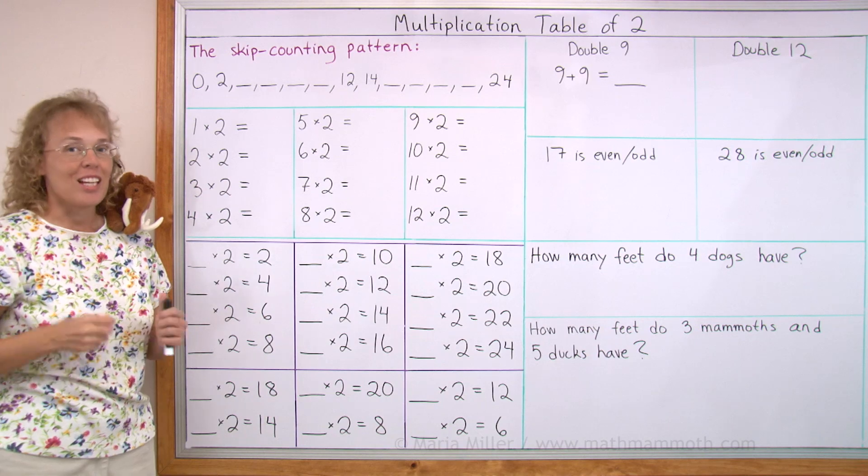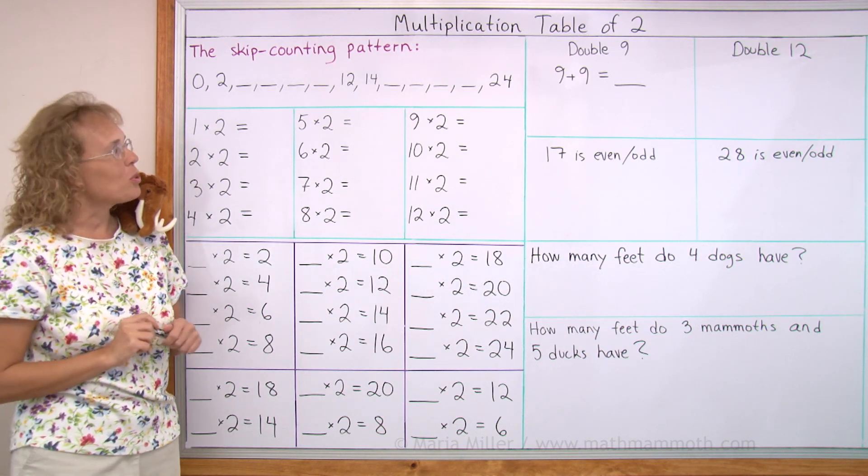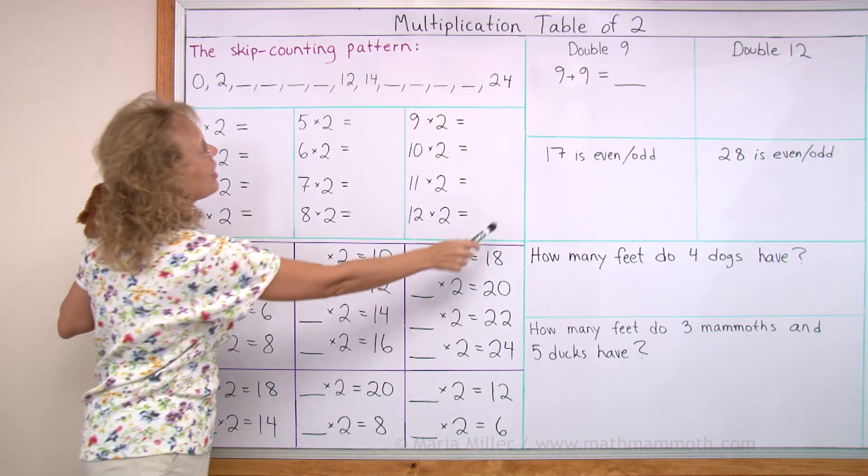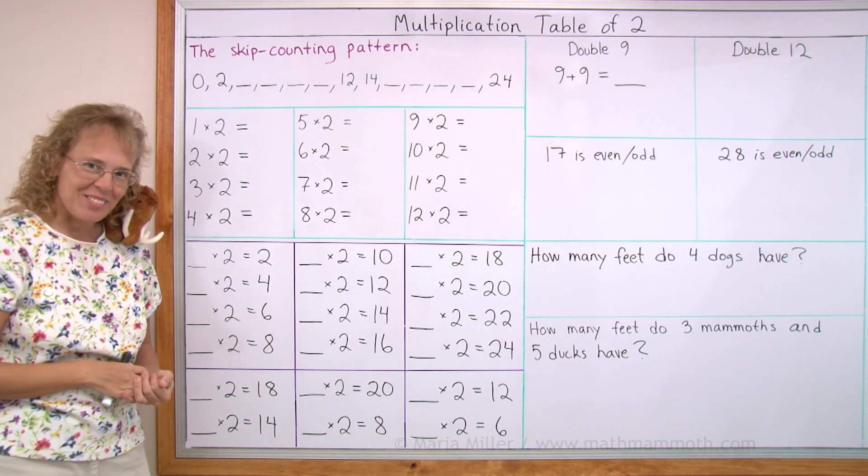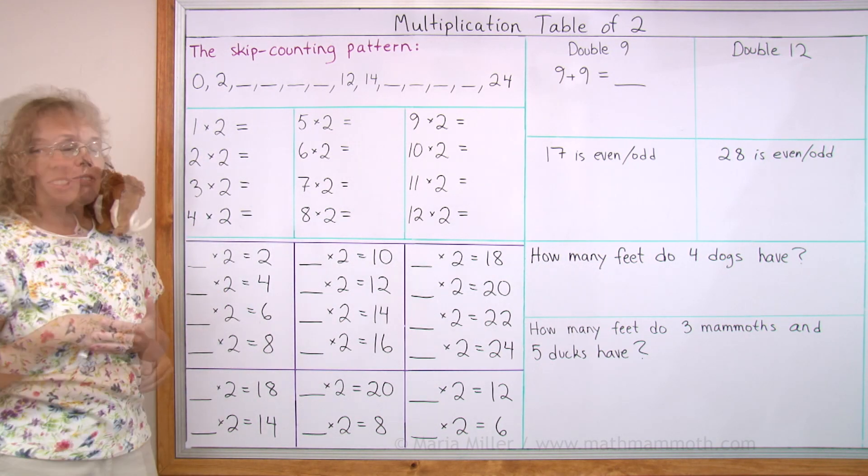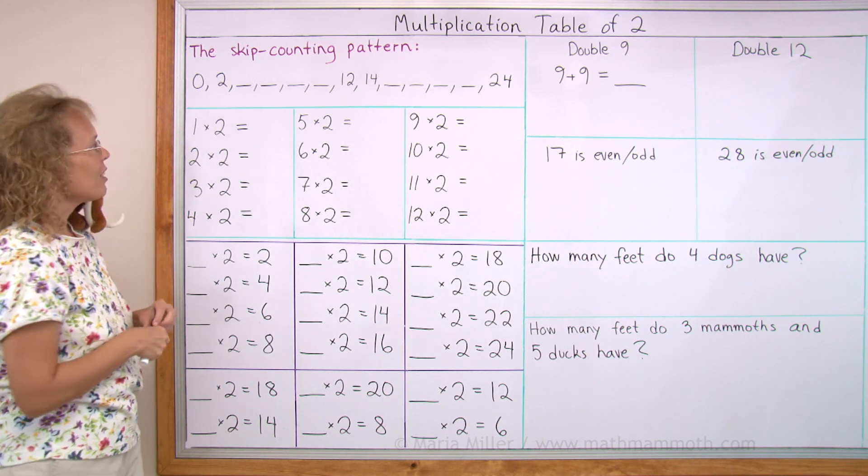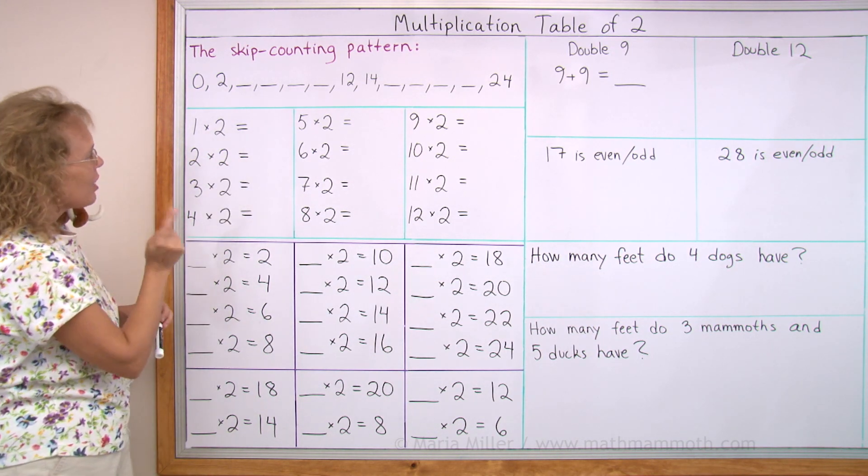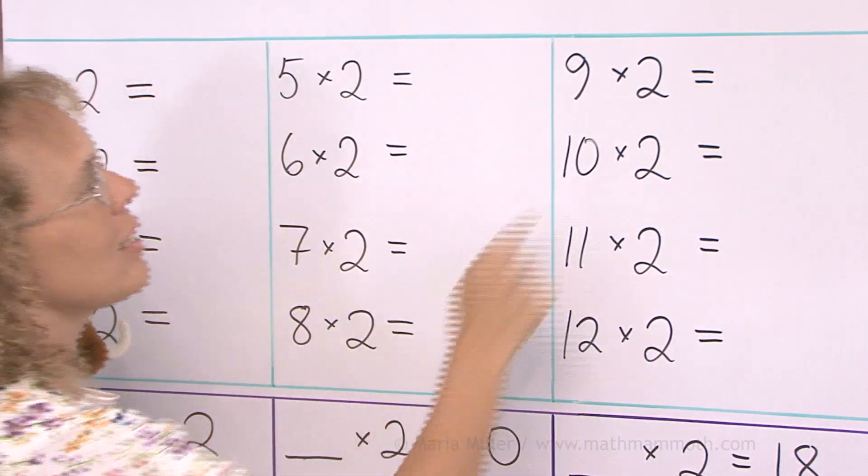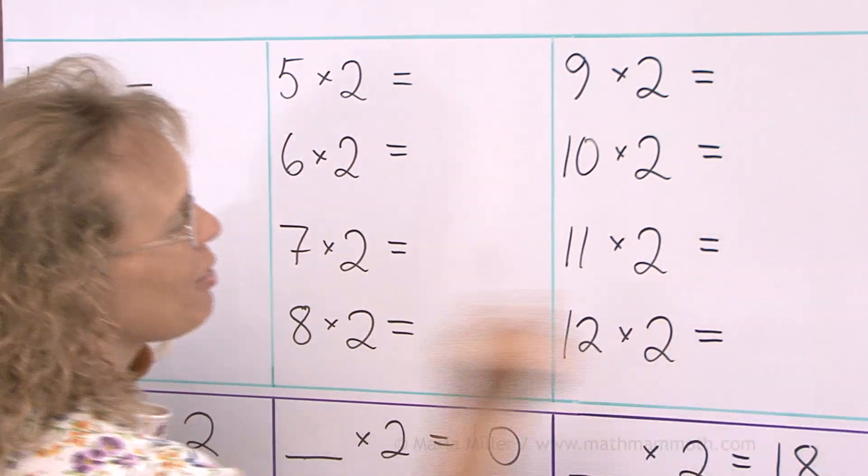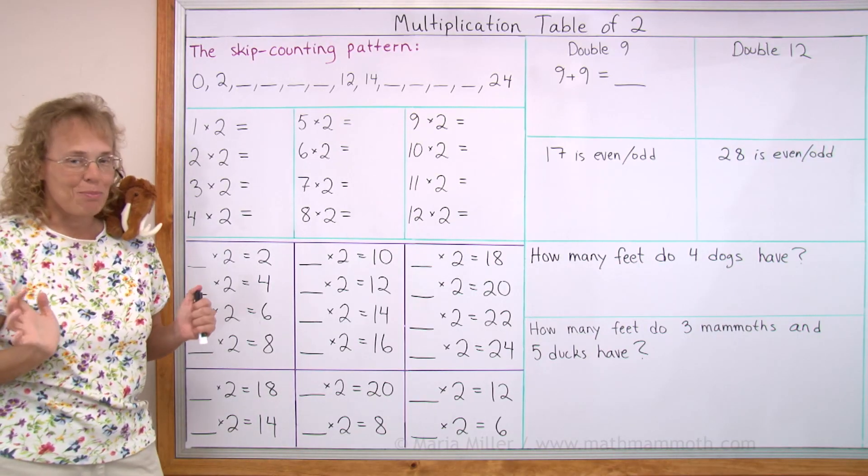Now we go to the actual multiplication table of 2. I've written it out here, except I didn't fill in the answers so we can practice together. And those answers from the skip counting list go here starting with 2. So the answers are 2, 4, 6, 8, 10, 12, 14, 16, 18, 20, 22, and 24. So that's the easy part.